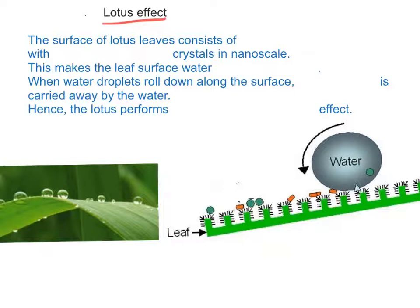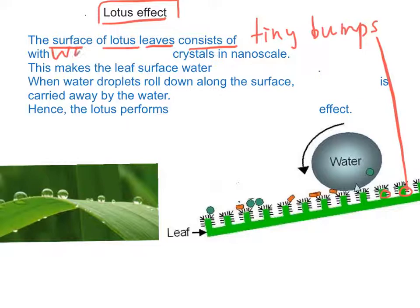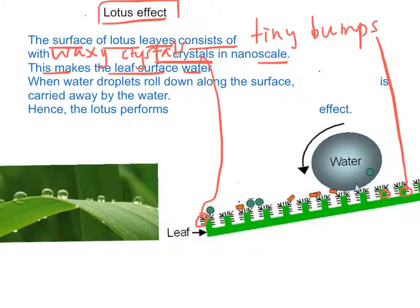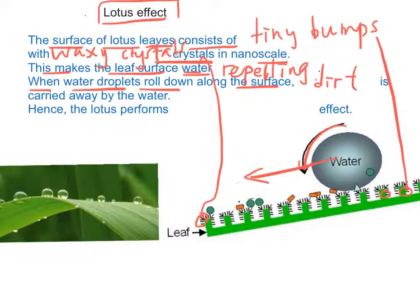Let's examine what is lotus effect. The surface of lotus leaf consists of a tiny bump with waxy crystals in nanoscale. This makes the leaf surface water repelling. When water droplets roll down along the surface, the dirt is carried away by the water molecules. Hence the lotus performs self-cleansing effect.